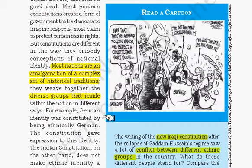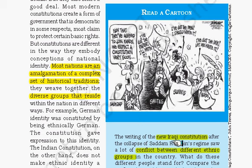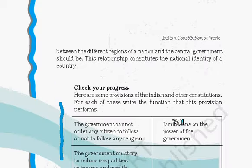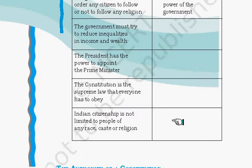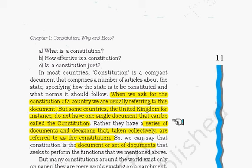Most nations are made after the amalgamation of a complex set of historical traditions, and different groups within a nation have to live together. For example, after the collapse of Saddam Hussein's regime in Iraq there was a new constitution to be made. In Iraq there were different ethnic groups — for example Sunni, Shia, Kurds, etc. — and there were multiple conflicts between these groups which made the base of the constitution very fragile. The constitution has to be strong enough so that all groups are represented equally and everyone's rights are respected.